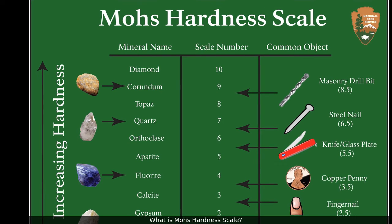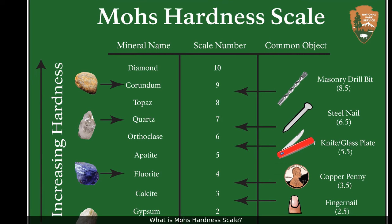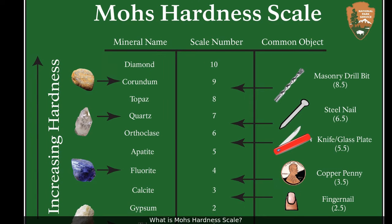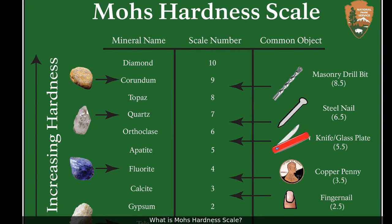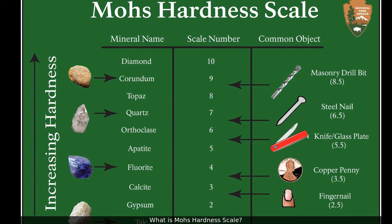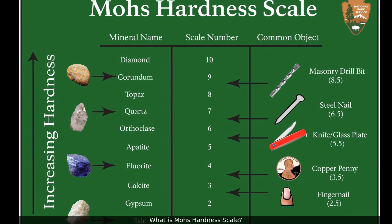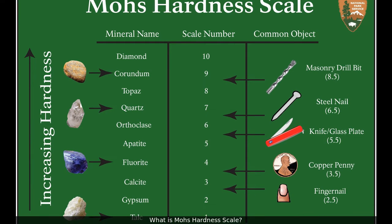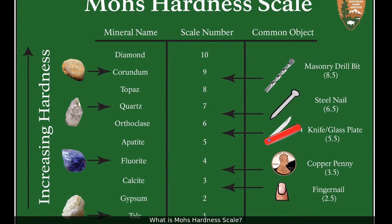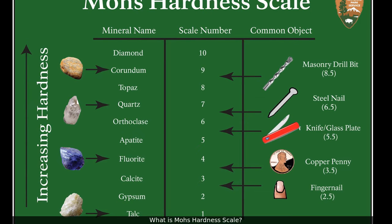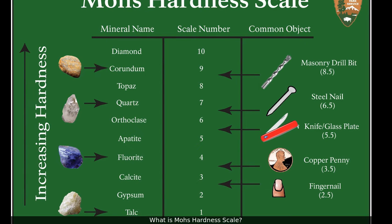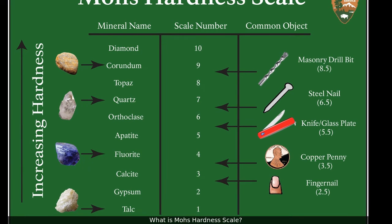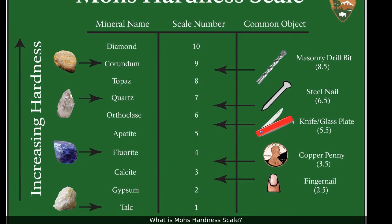What is the Mohs hardness scale? The Mohs hardness scale is a set of 10 reference minerals, numbered 1 through 10, that are used to determine the relative hardness of minerals and other objects. In this test, the hardness of a mineral is defined as its resistance to being scratched.